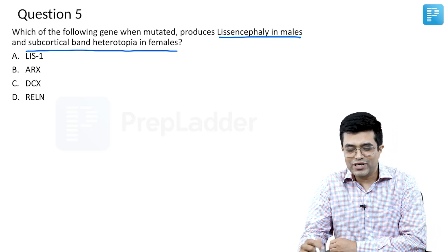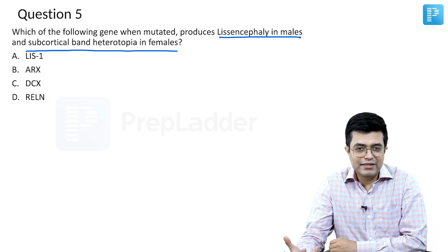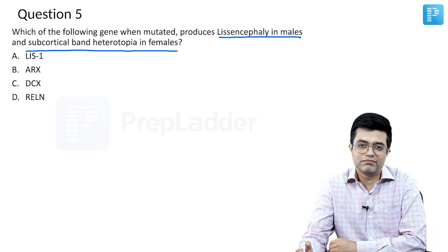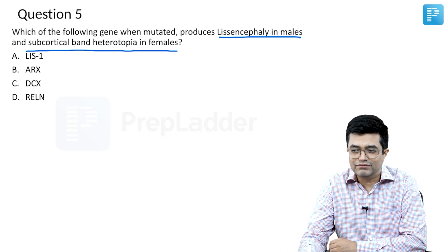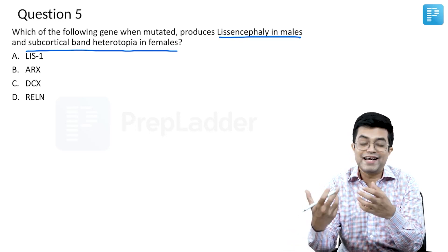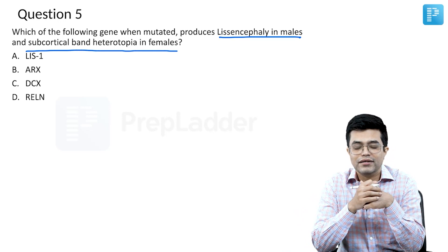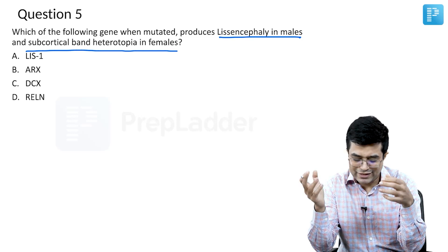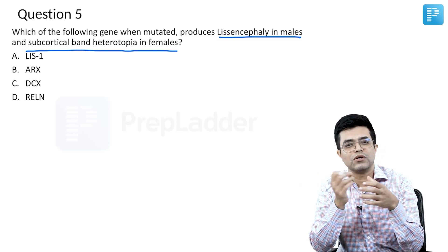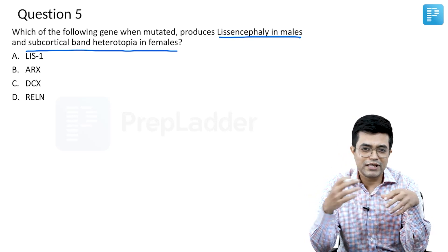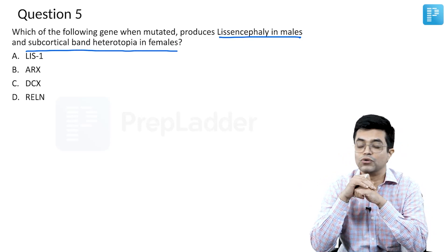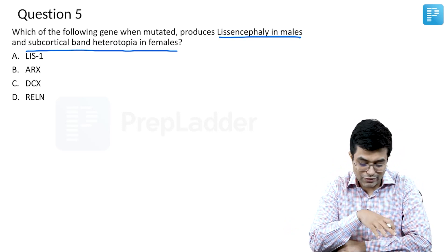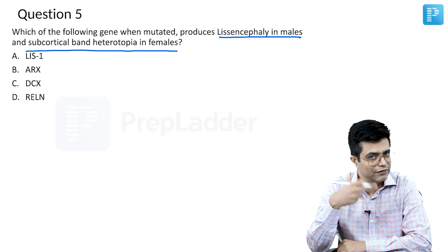What is lissencephaly? Lissencephaly is a migration disorder of the neurons. It is a smooth brain — there are no sulci, the ventricles are enlarged in size, and multiple genes have been implicated. Usually, we assume the classic disease is produced by mutation in the LIS1 gene present on chromosome 17, and this variety is also associated with Miller-Dicker syndrome. Let us look at the theoretical points and then come back to this question.